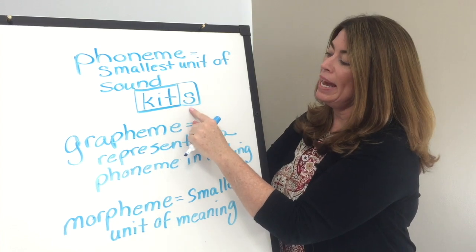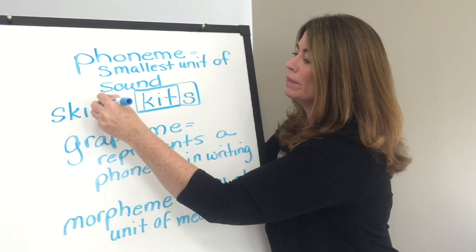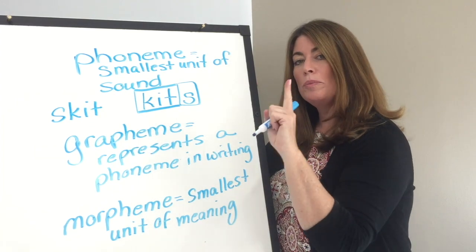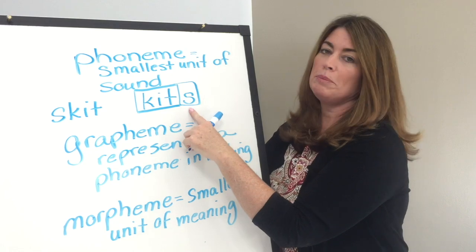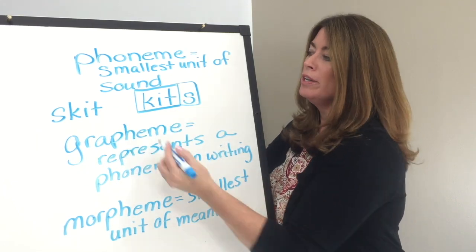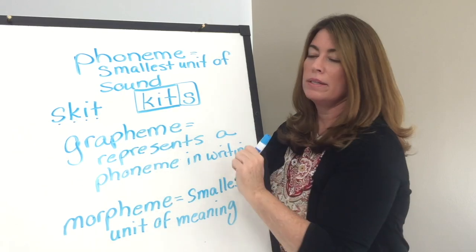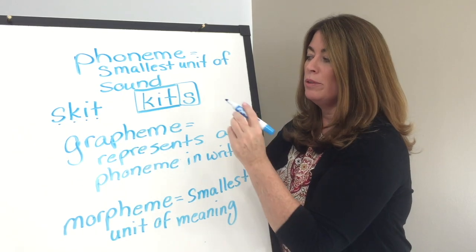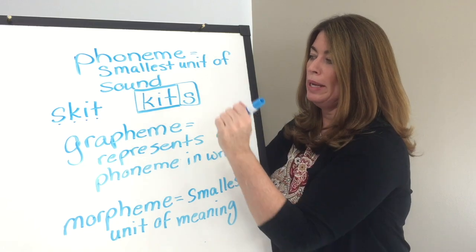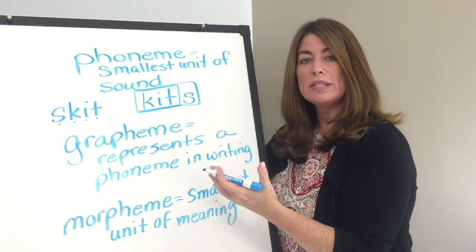Now I could take that S and put it on the front, and I would still only have one morpheme, because the S only means 'more than one' at the end. At the beginning, it changes the word to something else. So I would have four phonemes — s, k, i, t — which is 'skit.' That's different than 'a kit.' It has four sounds, four phonemes, four graphemes, but only one morpheme because there's one definition for the word skit.